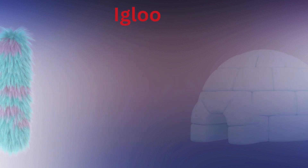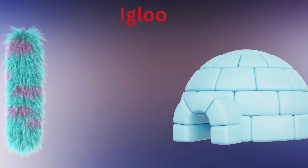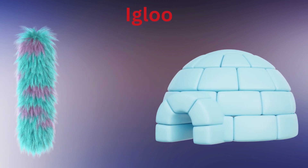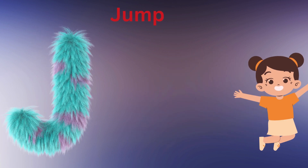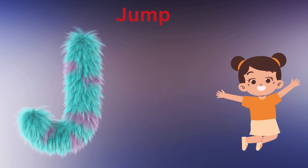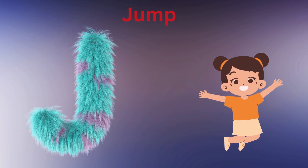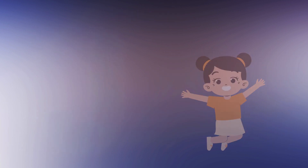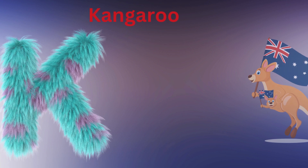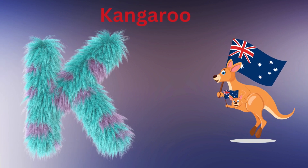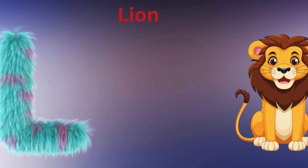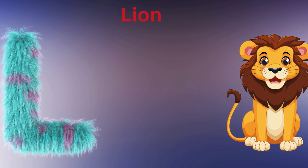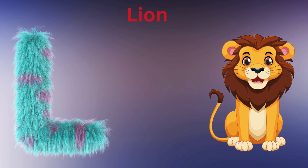I is for Igloo, I-I-Igloo. J is for Jump, J-J-Jump. K is for Kite, K-K-Kite. L is for Lion, L-L-Lion.